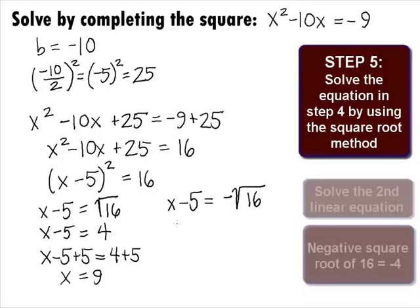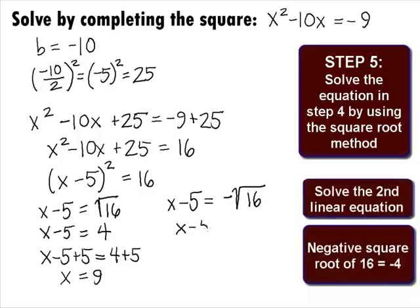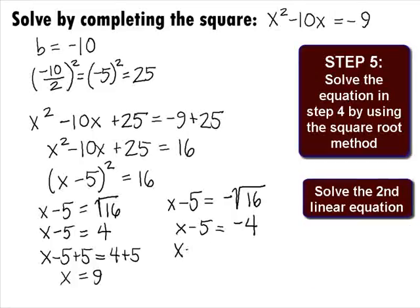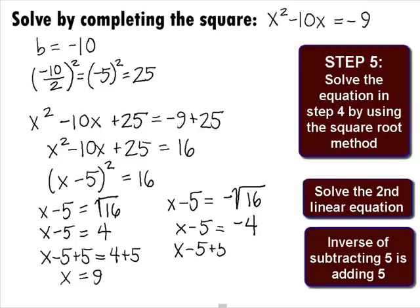In the second equation, we have the negative square root of 16, which will give us x minus 5 equals a negative 4. The inverse of subtract is to add 5 to both sides, which will give us x minus 5 plus 5 equals negative 4 plus 5. This will simplify to be our second answer, which is x equals 1.